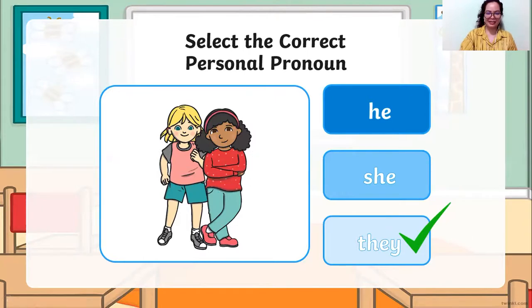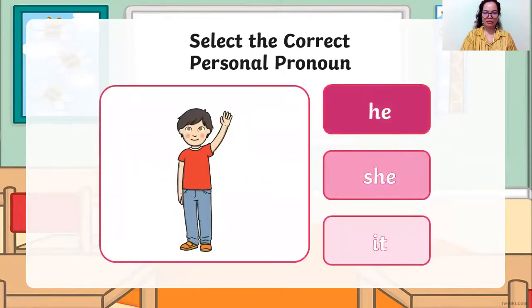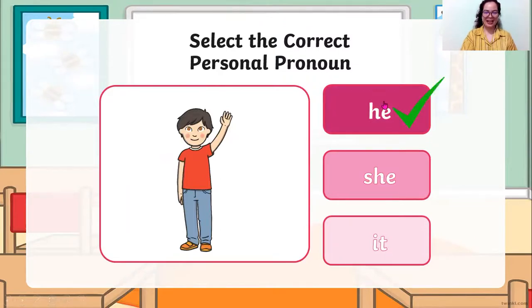Next. It's a boy — he, she, or it? The correct answer is he, because this is a boy and the boy is only one or singular.